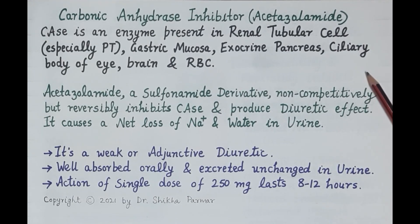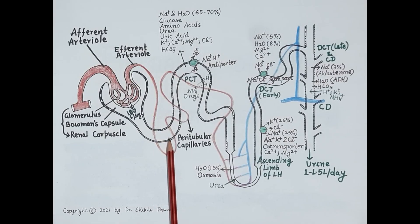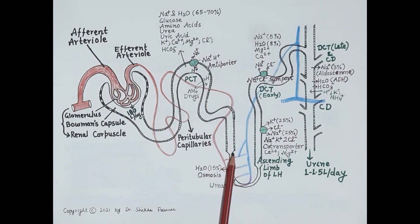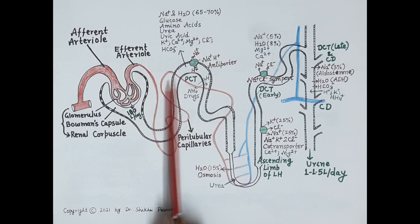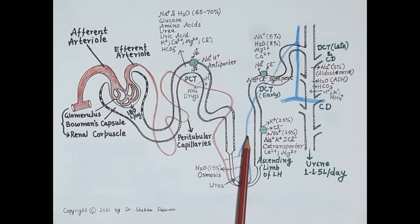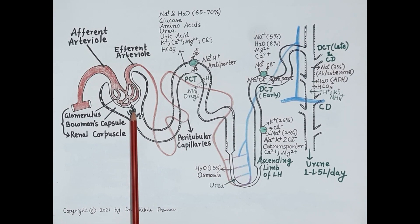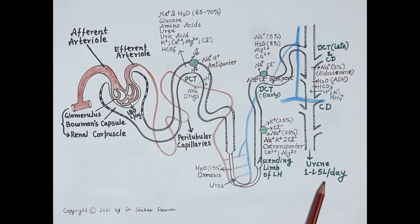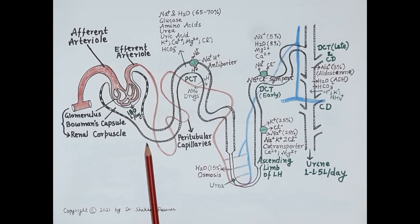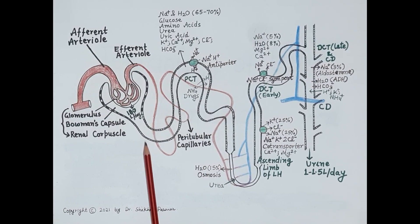Before discussing carbonic anhydrase inhibitors, let's quickly revise the function of kidneys and the role of diuretics. This diagram shows the structure of a nephron, along with the peritubular capillaries, also termed the vasa recta. The most important function of kidneys is to filter and purify blood and remove waste toxic products in the form of urine. The structural and functional unit of the kidney is the nephron, and each kidney consists of around 1 million nephrons.